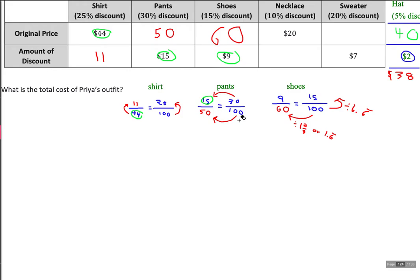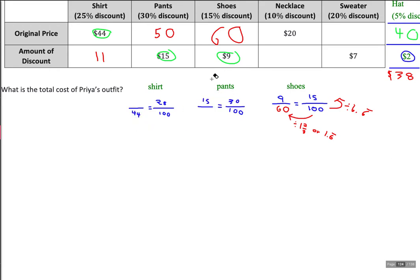We had these proportions set up, and at first some numbers were missing. For the shirt and pants with a 25% and 30% discount, I had 25 over 100 and 30 over 100 for my percents. The original price of the shirt was 44, so that's on the bottom, and the discount price for the pants was 15, on the top.